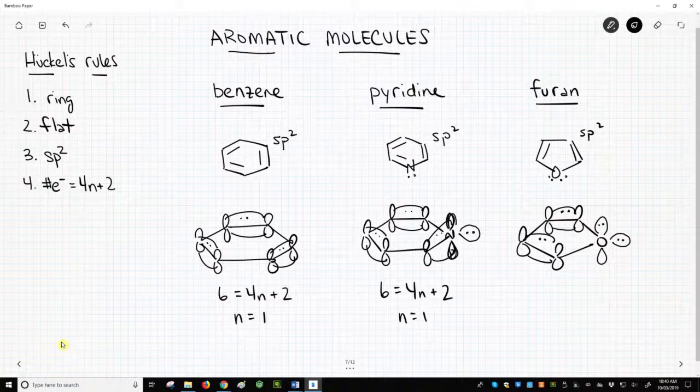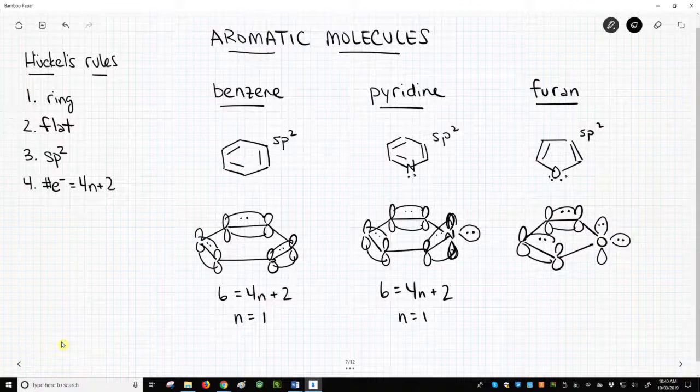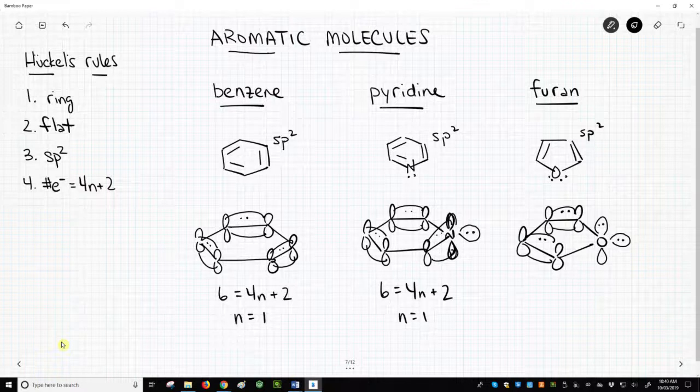Those are Hückel's rules. To be aromatic, molecules need a flat ring with each ring atom having a p orbital and an appropriate number – normally six – electrons in those p orbitals.